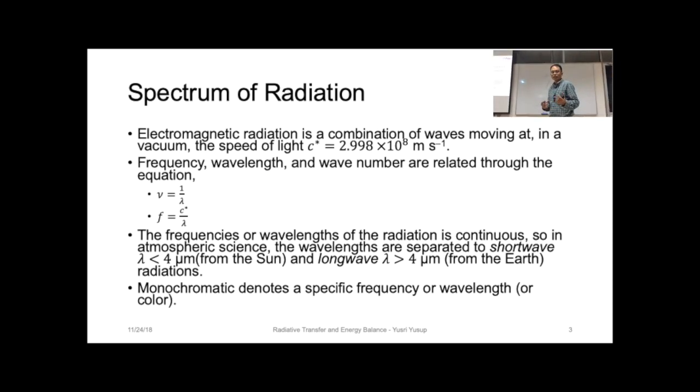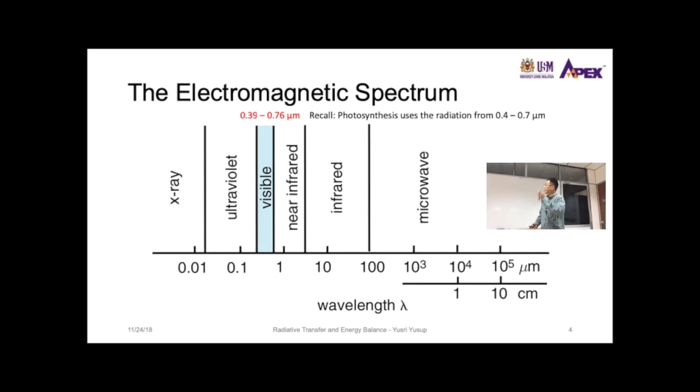The electromagnetic spectrum - you saw this spectrum I sketched just now. This is the actual spectrum, but they don't show the actual values, just the range. It goes from 0.01 micrometers up to 10 to the power of 5 micrometers, or 10 centimeters.